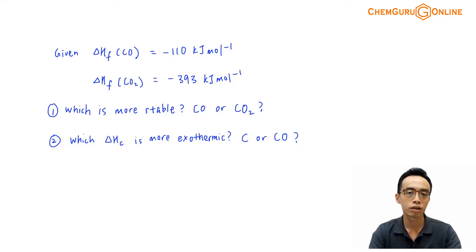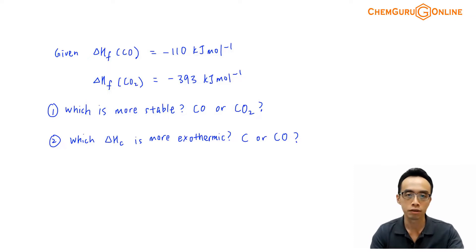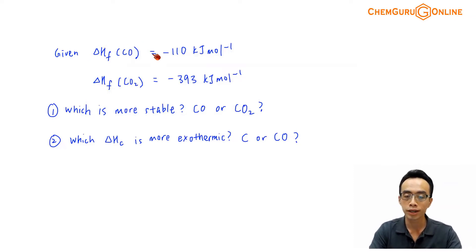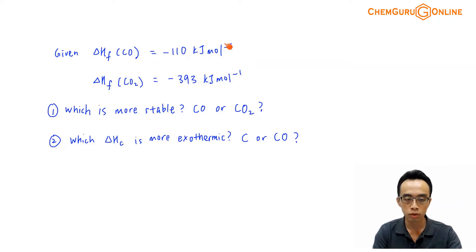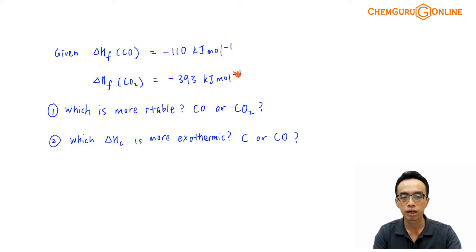Hi everyone, this is Maverick Power, the chemistry guru. Now let us take a look at what we want to discuss this week. Given the following information: the enthalpy change of formation of carbon monoxide is minus 110 kJ per mole, and the enthalpy change of formation of carbon dioxide is minus 393 kJ per mole.